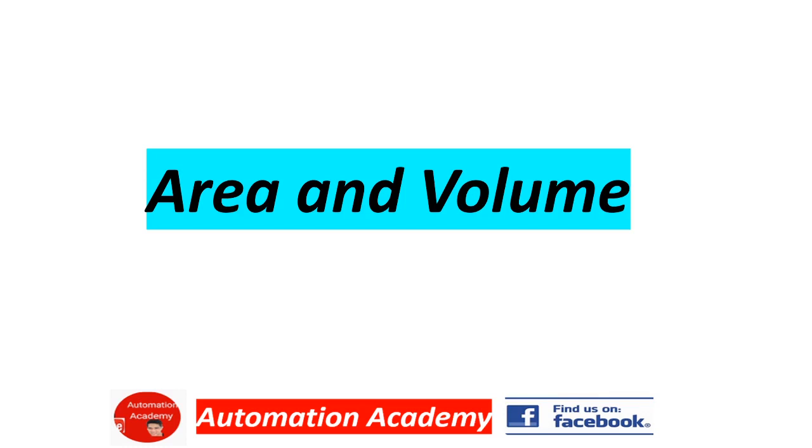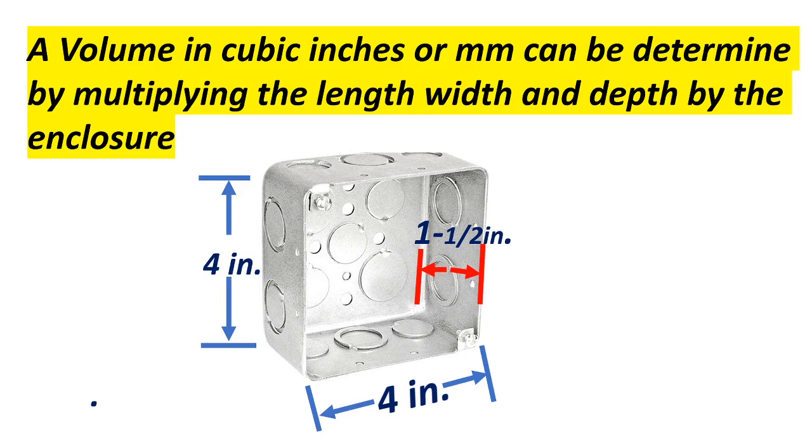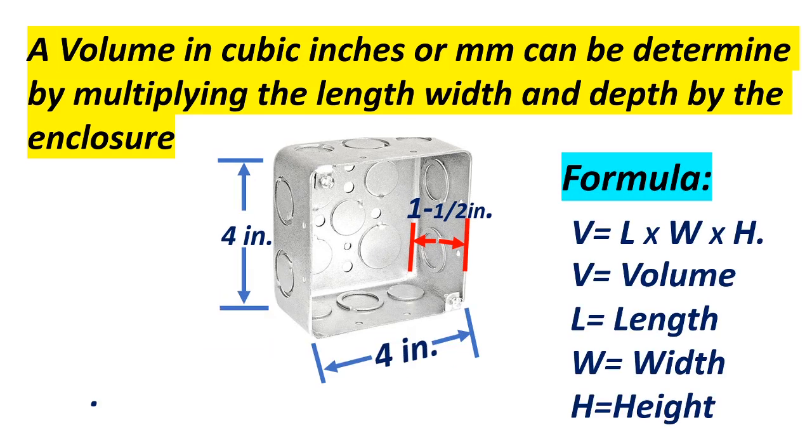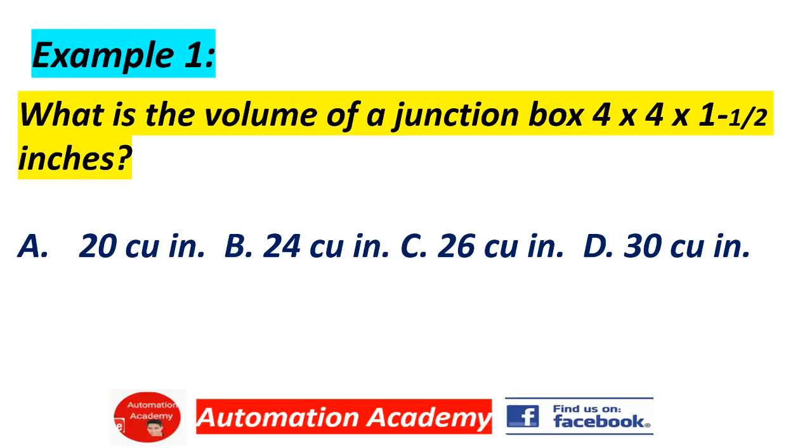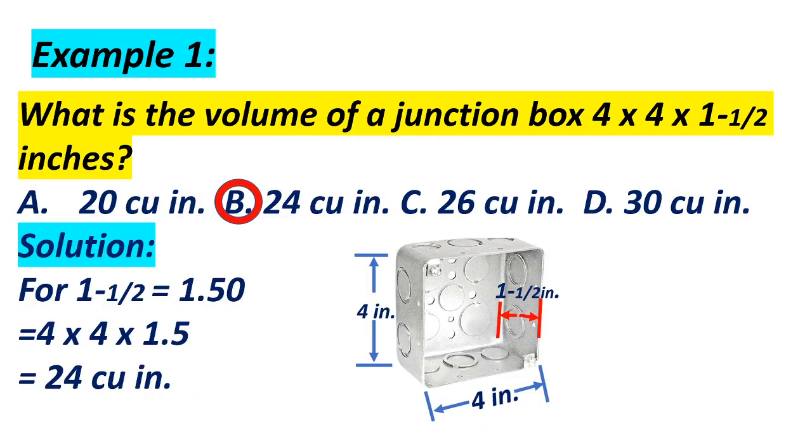Our next topic is area and volume. A volume in cubic inches or millimeters can be determined by multiplying the length, width, and depth of the enclosure. We have here an example of a utility box. The length is 4 inches, the width is 4 inches, and the depth is 1.5 inches. The formula for volume: V = L × W × H. Example number 1: What is the volume of a junction box 4 by 4 by 1.5 or 1 and 1/2? A. 20 cubic inches, B. 24 cubic inches, C. 26 cubic inches, D. 30 cubic inches. Solution: 1 and 1/2 equals 1.5, so 4 × 4 × 1.5 equals 24 cubic inches.